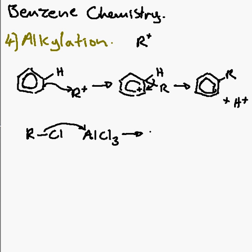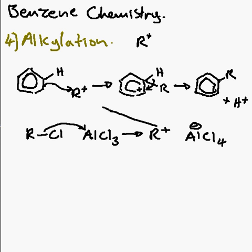Continuing with making your R group: the reaction creates the R⁺ and AlCl₄⁻. As you can see, that species has all the extra electrons, and we have our reactive R⁺ species ready to proceed.